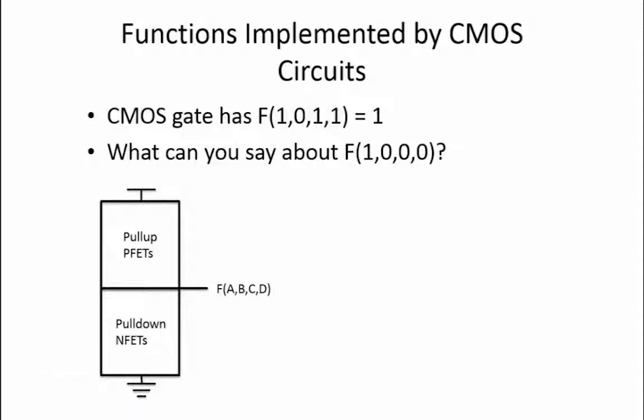All CMOS gates are inverting, which means that if all your inputs are 0, then only the PFETs in the pull-up are on, and so the output equals 1. If all your inputs are 1, then only the NFETs in the pull-down circuitry are on, and the output equals 0.